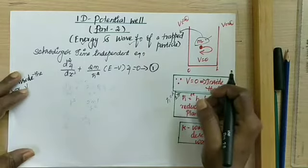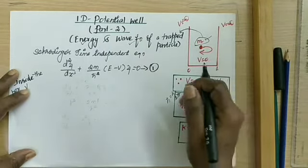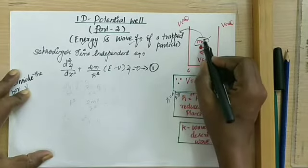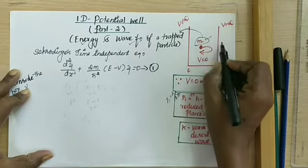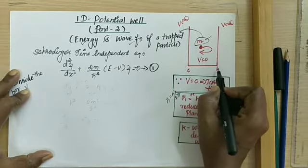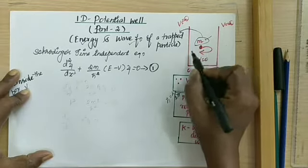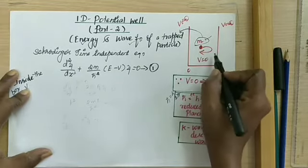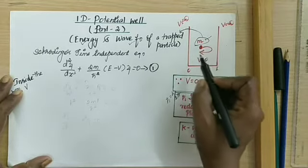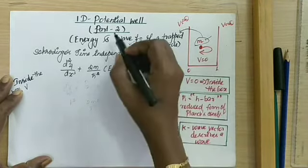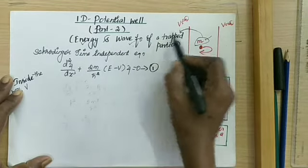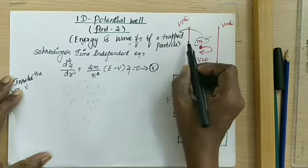Hi students, we are looking at the derivation of one-dimensional potential well, that is a particle of mass m being trapped inside the box, whose width is given as 0 and L. The boundary conditions imposed on a particle have been explained in detail in part 1 of the video lecture. Here in part 2, the aim is to find out the energy and wave function of a particle being trapped inside the box.